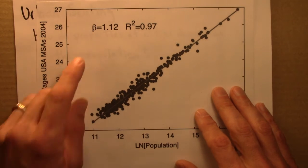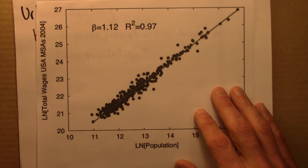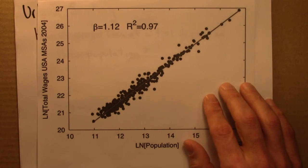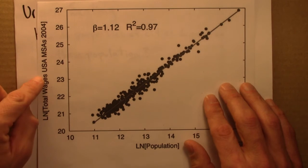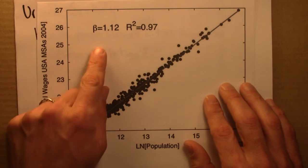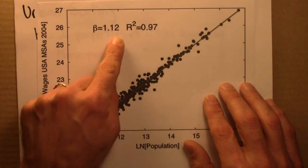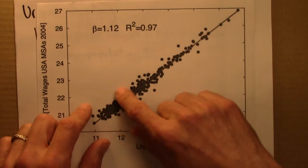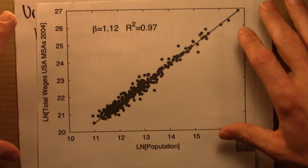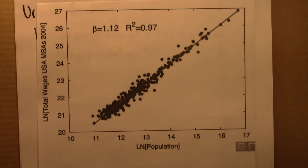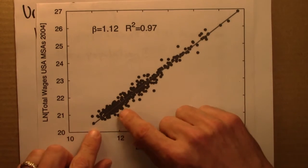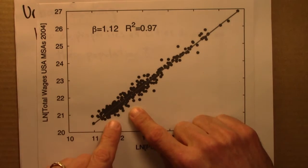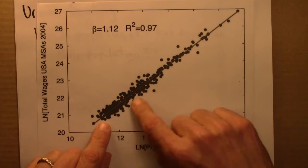So that if you double the population, on average, according to this trend, you would more than double the total wages. It would go up by 2 to the 1.12, not 2 to the 1. So that's sort of interesting, I think, and others have thought, because we might expect that it would be linear, doubling population would double wages, but that's definitely not what we see.